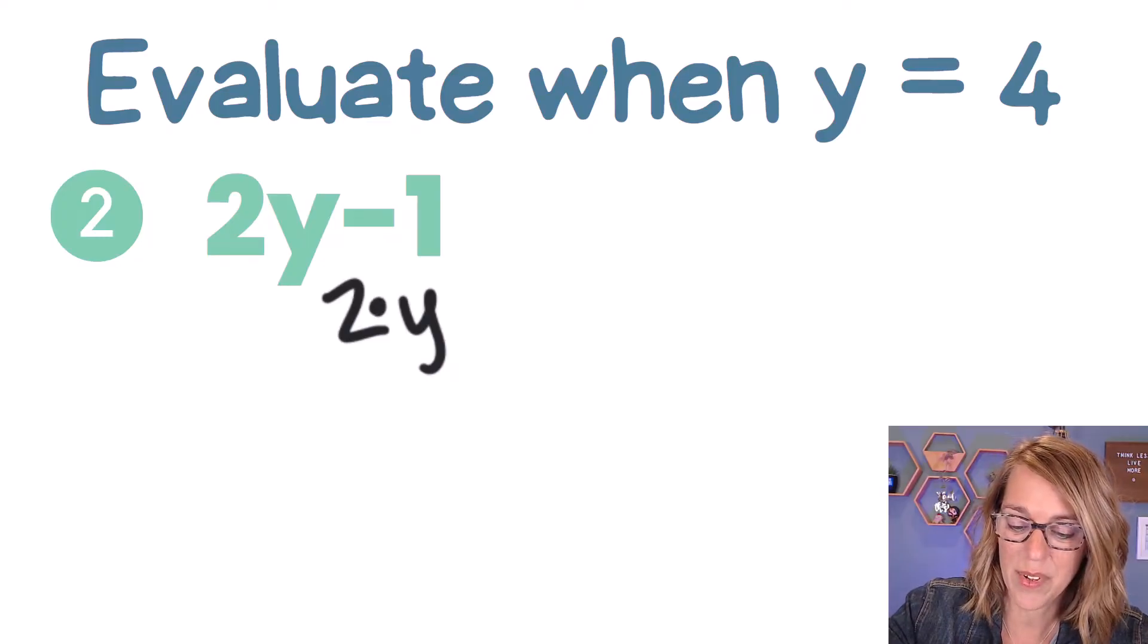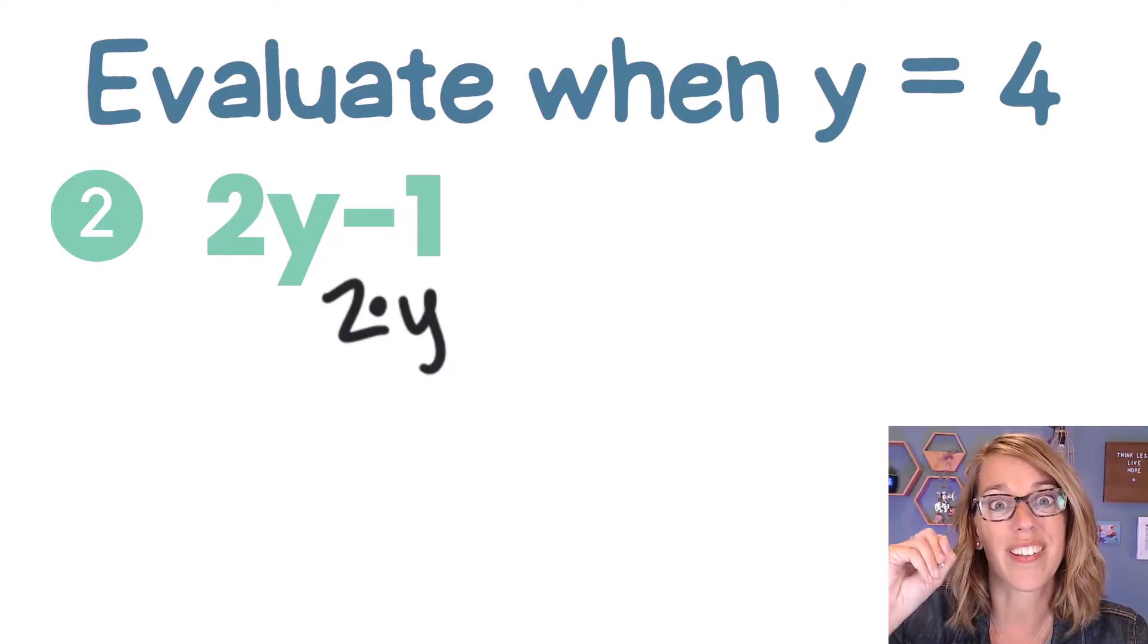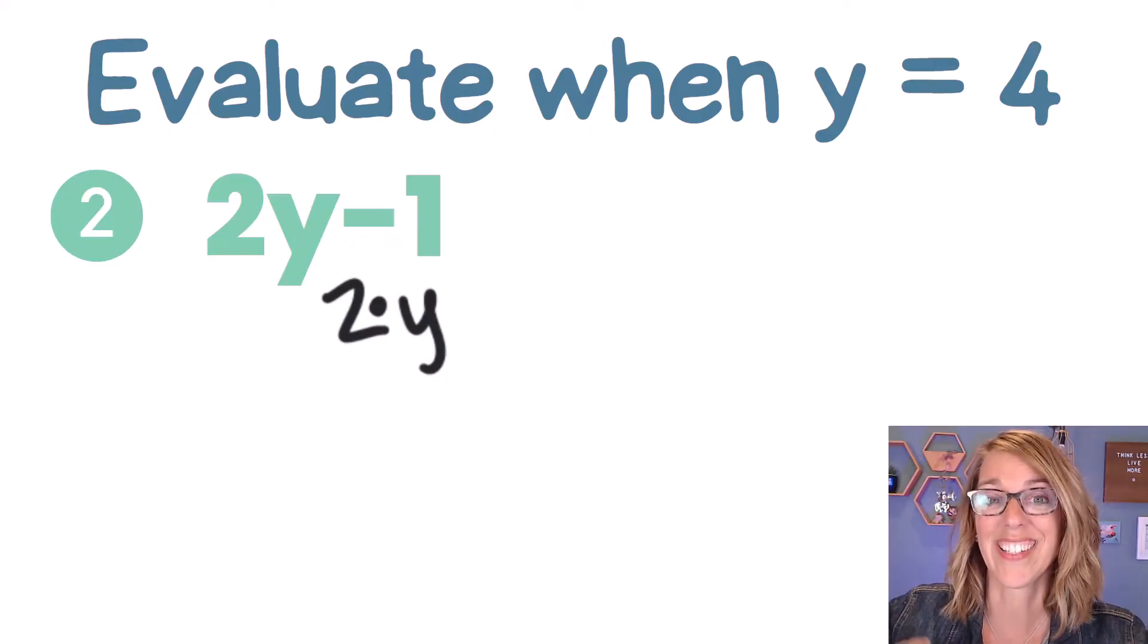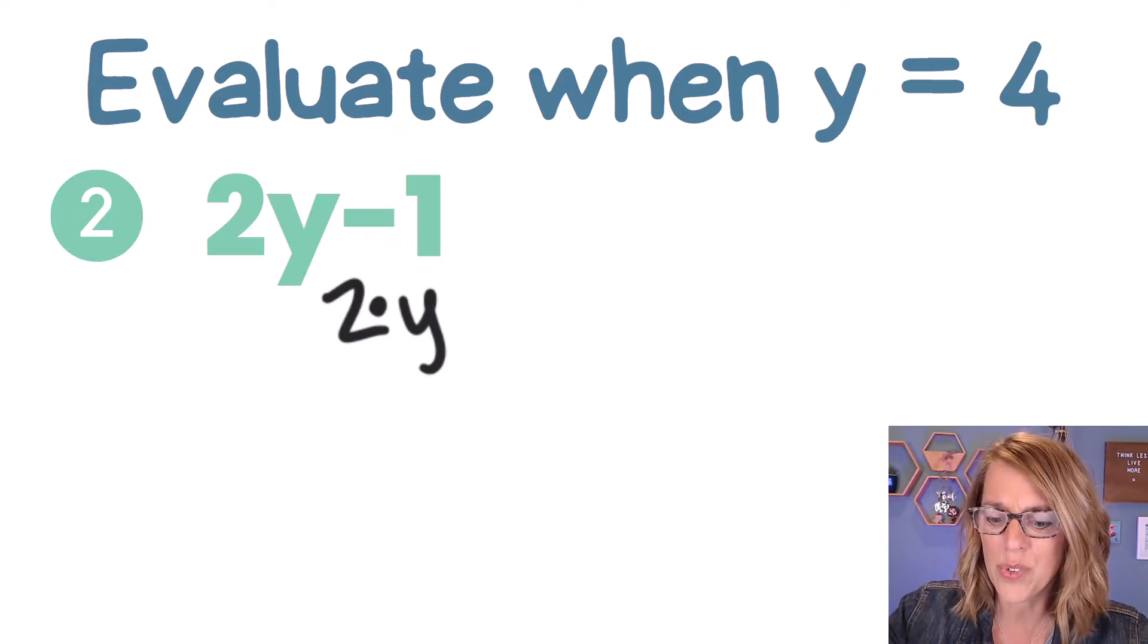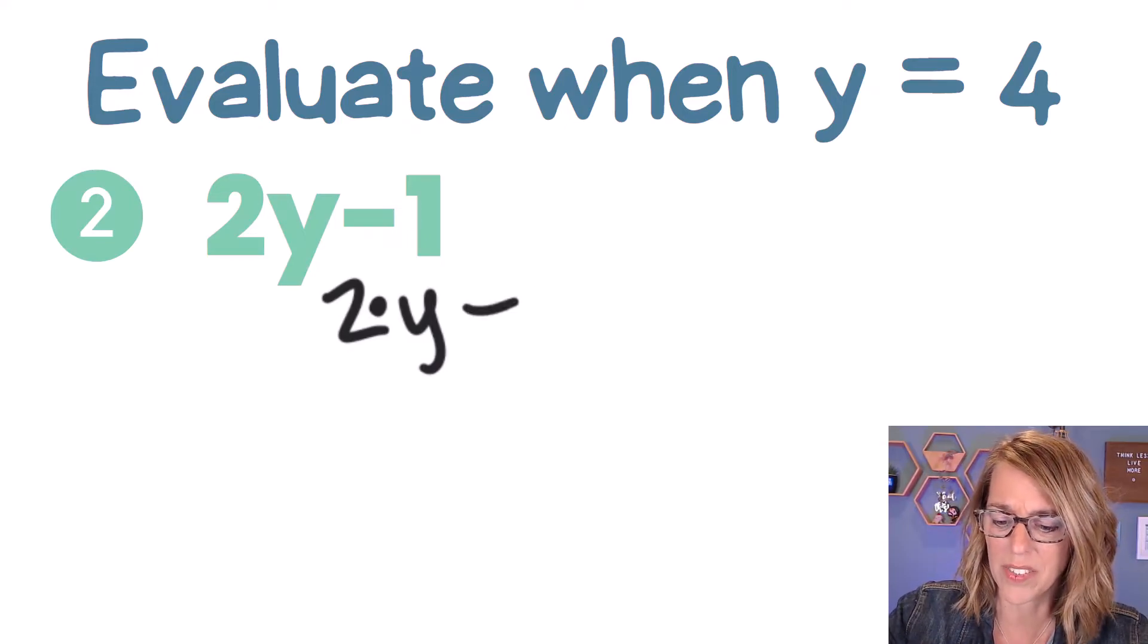So there is a multiplication, and we're going to use a dot instead of an x, because x's look like our variables. So we're going to use a dot for multiplication. So this really means 2 times y minus 1.